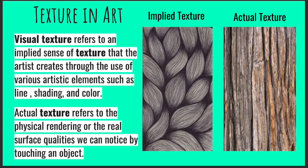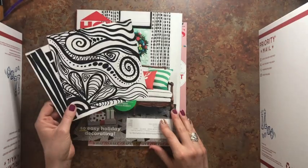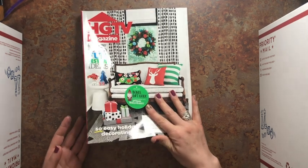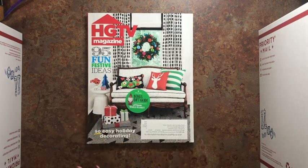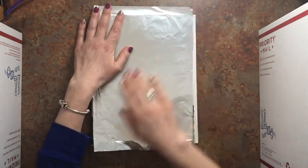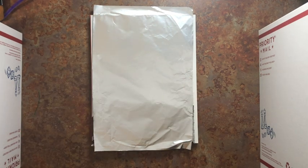Sometimes artists do use actual texture in art, like you will be today. You're going to create texture in the foil that you'll then color around, so the texture will actually pop out of the foil and you'll be able to feel it. For this project you're going to need magazines — I have two stacked here — to give a nice soft surface to work on.